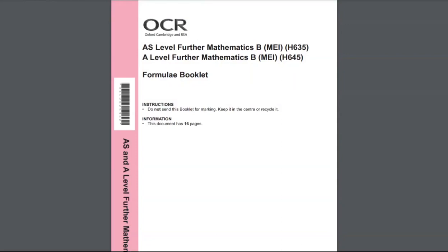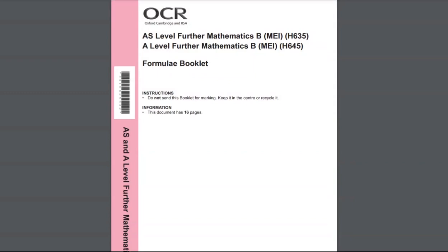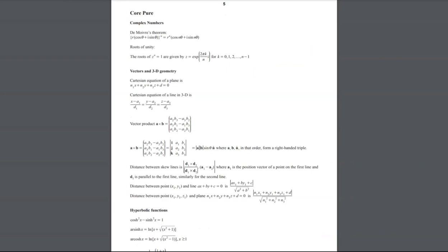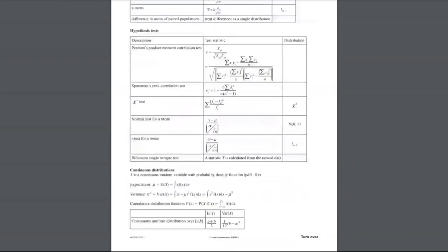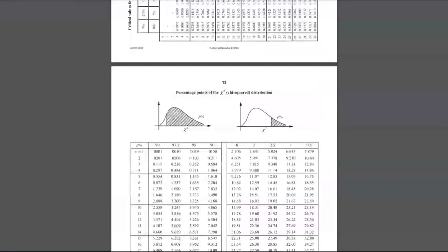So in this video I want to talk about the critical values for the chi-squared contingency table test and where to find them in the OCR MEI further maths formula booklet. So we're going to scroll down until we hit page 13.